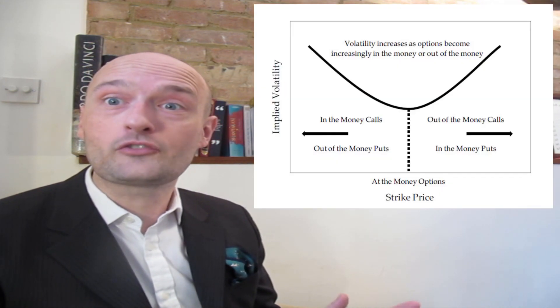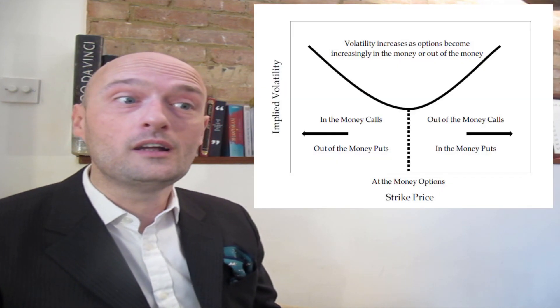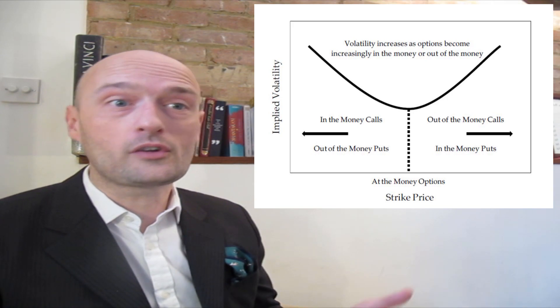It doesn't seem reasonable to price one option with higher volatility than another. These different options are all based on the same underlying, so at first it seems to make sense that they should have the same implied volatility — but they don't. The reason they don't is because of flaws in the Black-Scholes model.